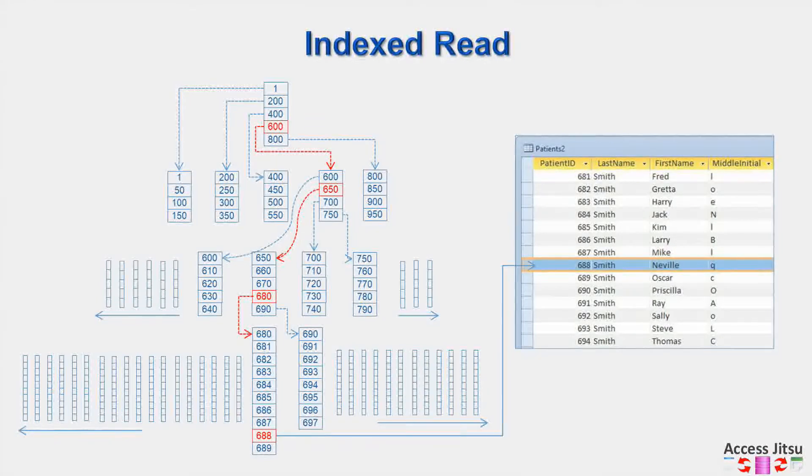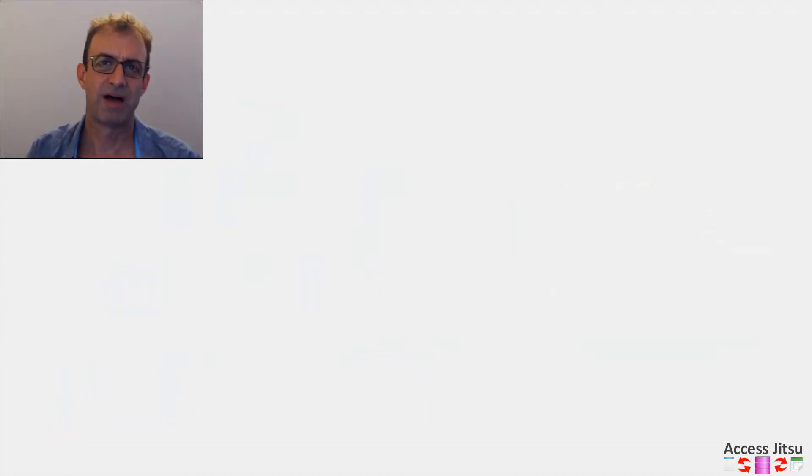And that bottom row there, our leaf node row of indexes, points to the actual data value. The terminology there about the index structure is really not important. What I want you to take from that discussion is the relative number of reads between the two methods. In the table scan on our unindexed table, the table scan had to read through 688 records to find the record we were looking for. Whereas in the indexed read example, it had to read much, much fewer rows. And that's why indexes, or that's how indexes, speed up reads.